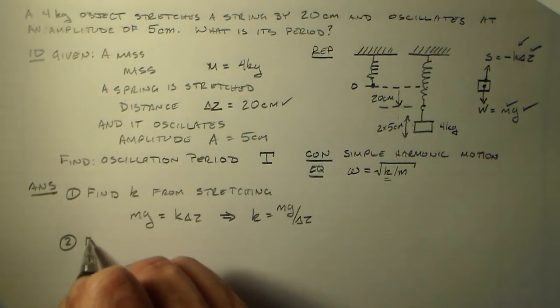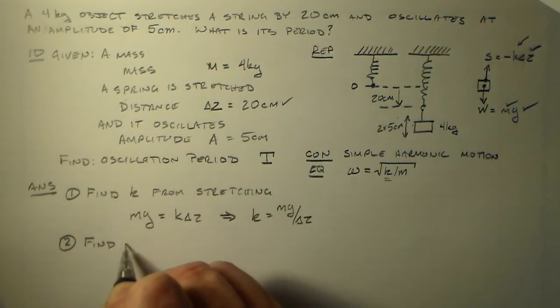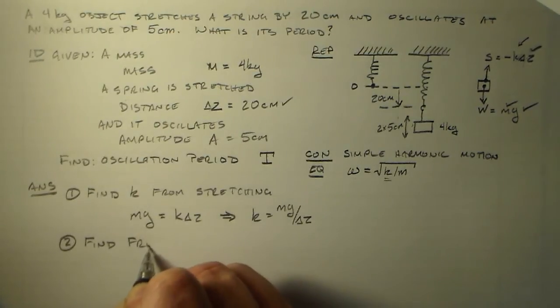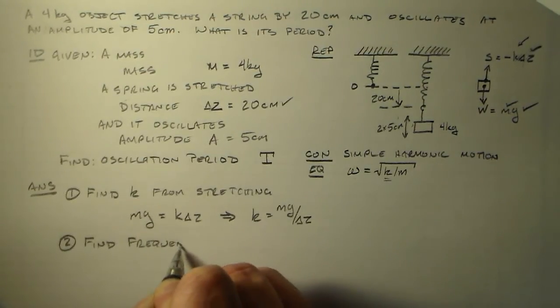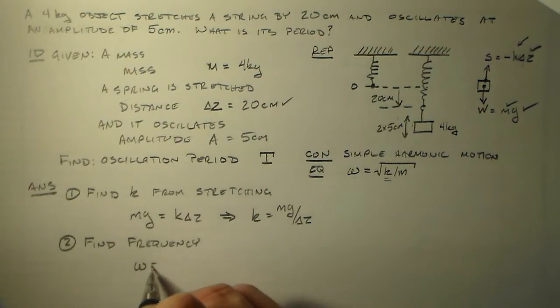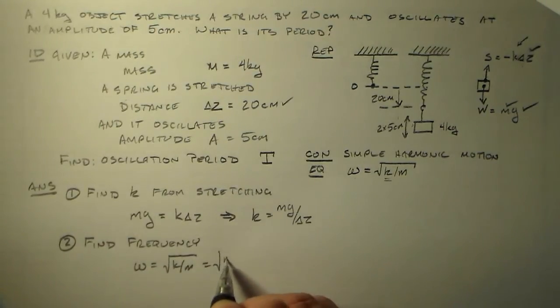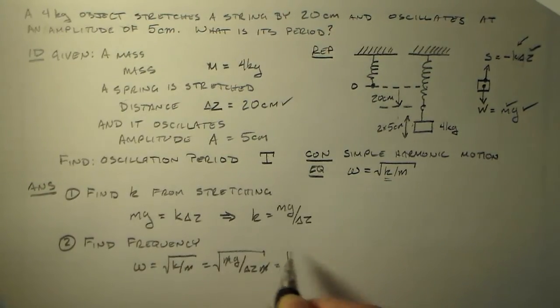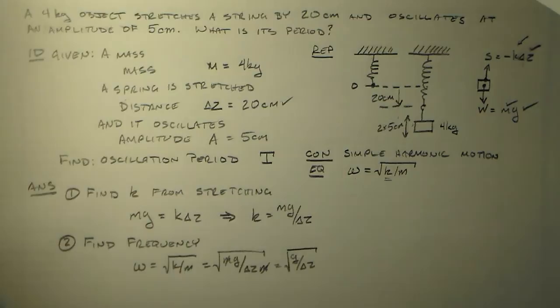So let's go ahead and find the period or find the frequency. So the frequency is omega is equal to k over m, which is equal to the root of mg over delta z over m. So that's just g over delta z. And we're almost there.